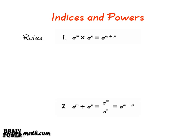Rule 2 states that a to the power of m, divided by a to the power of n, is equal to a to the power of m minus n.